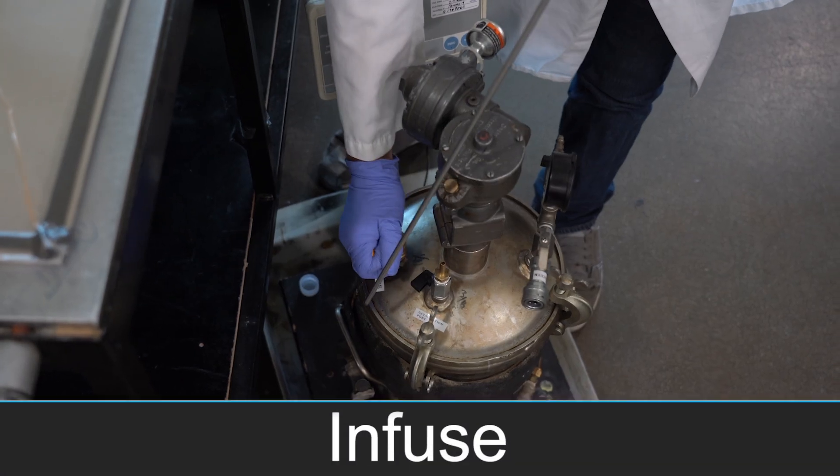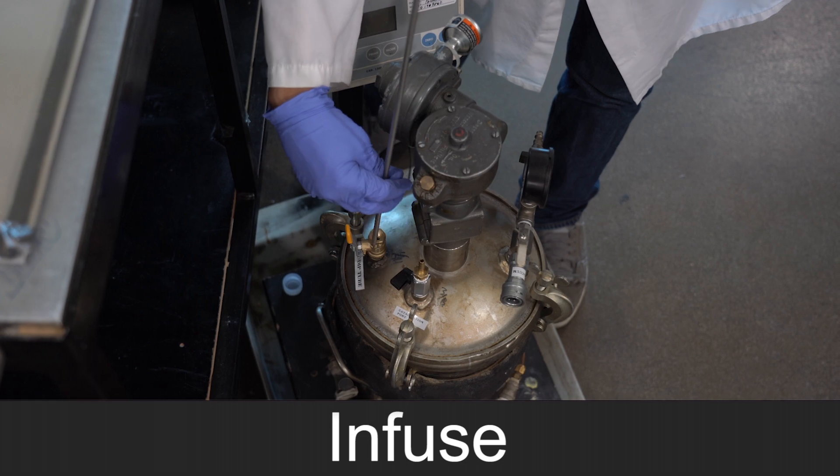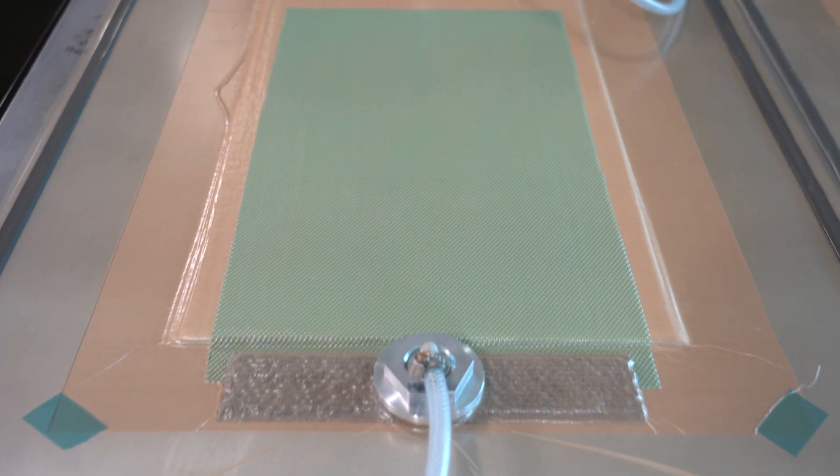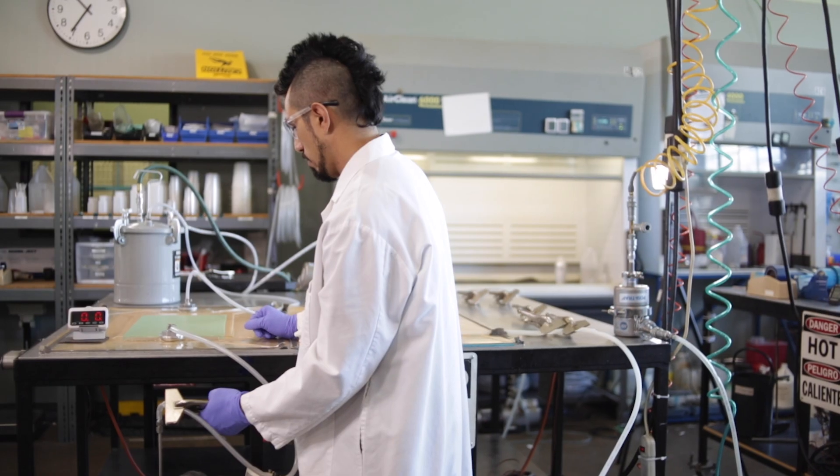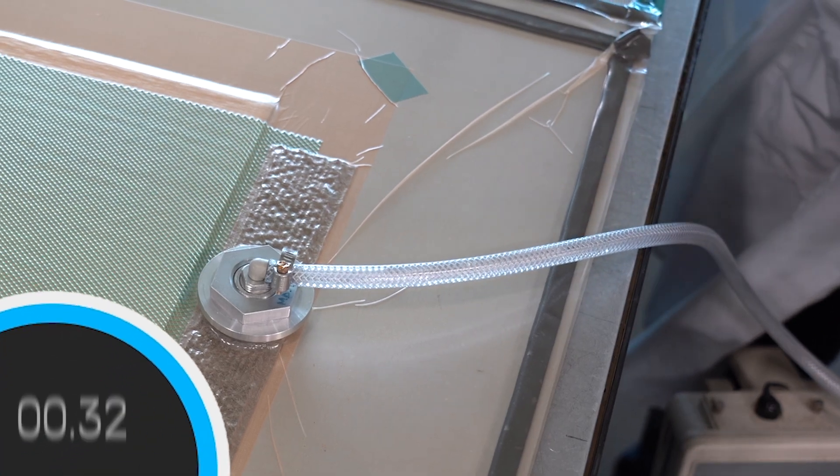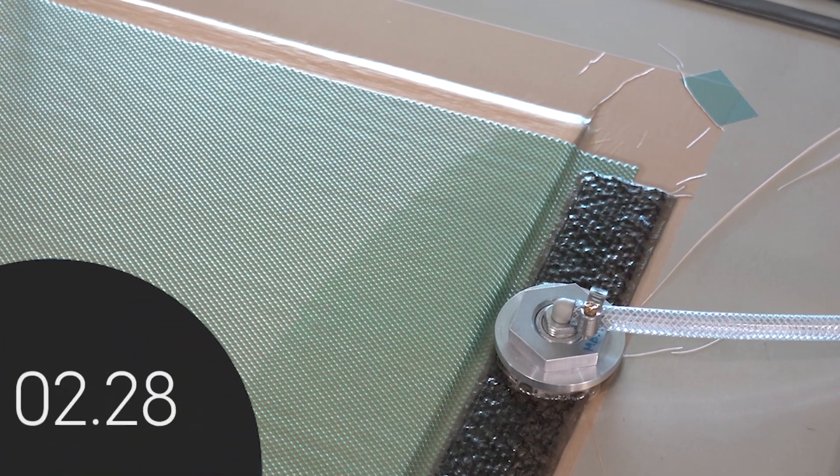The resin has a viscosity at room temperature around 10 centipoise. So special care has to be taken to eliminate any open channels in the vacuum bag. The vacuum bag should be checked for any leaks. You only have a few seconds during your infusion time.